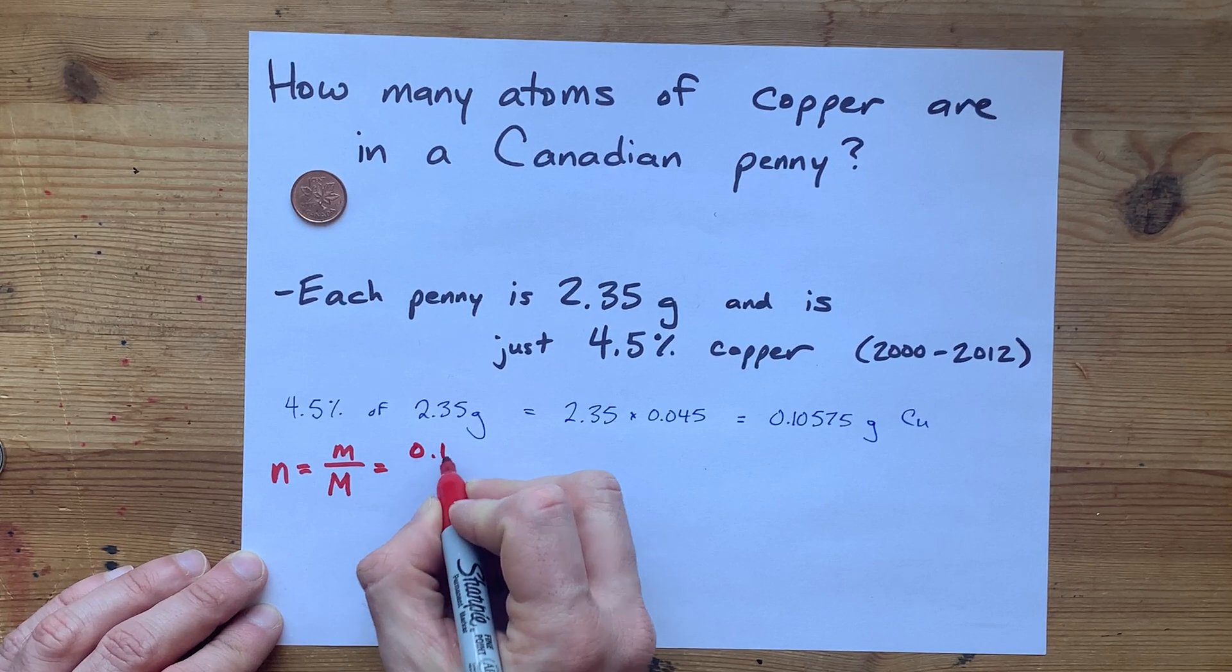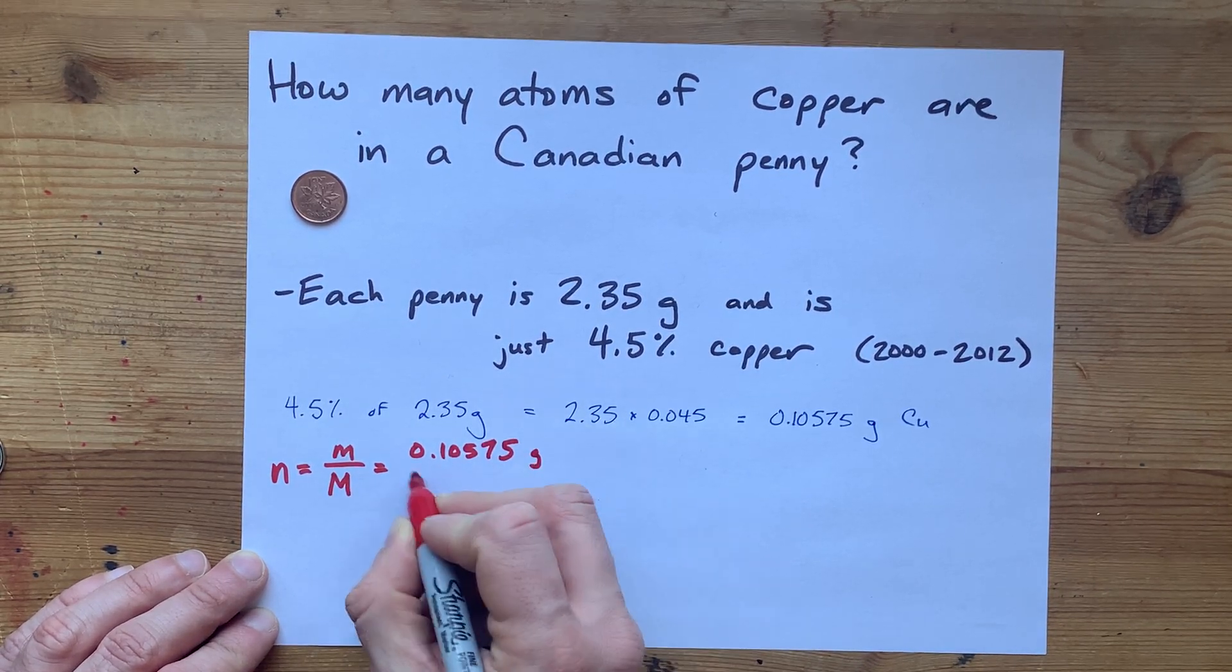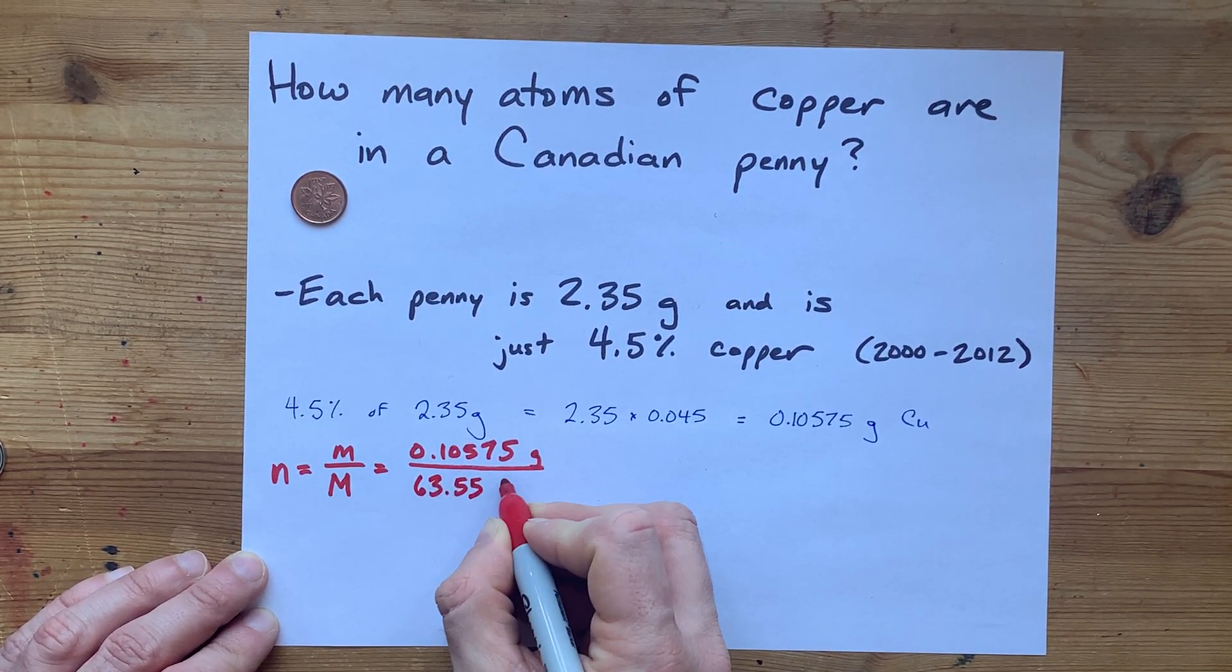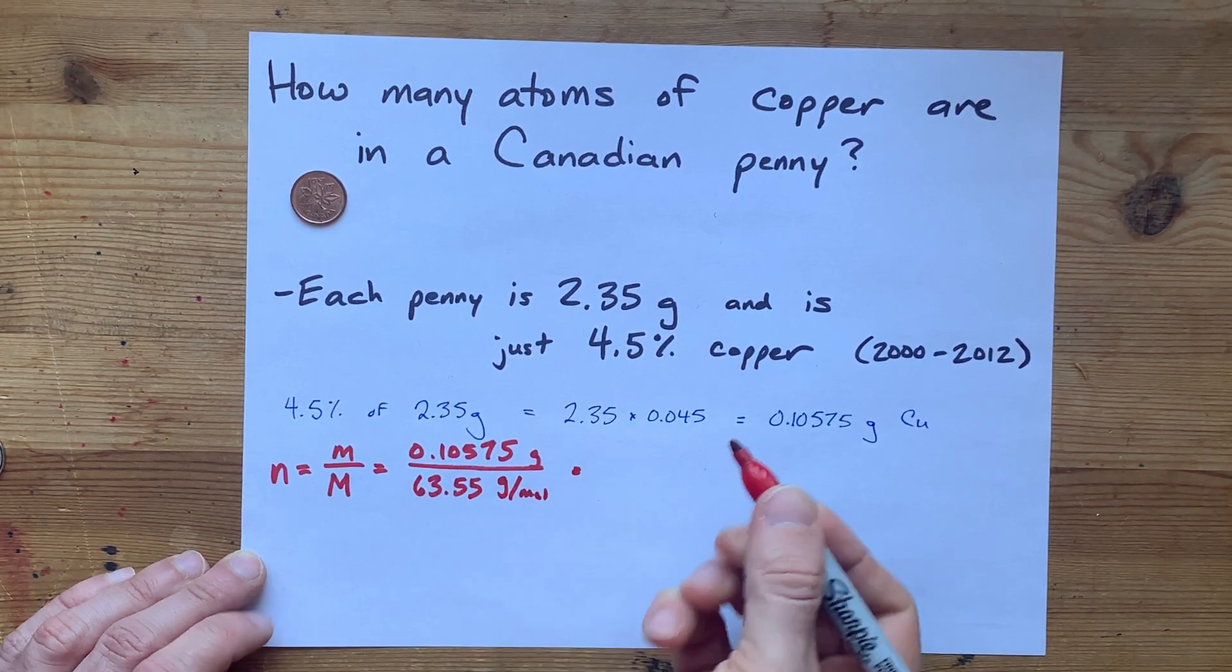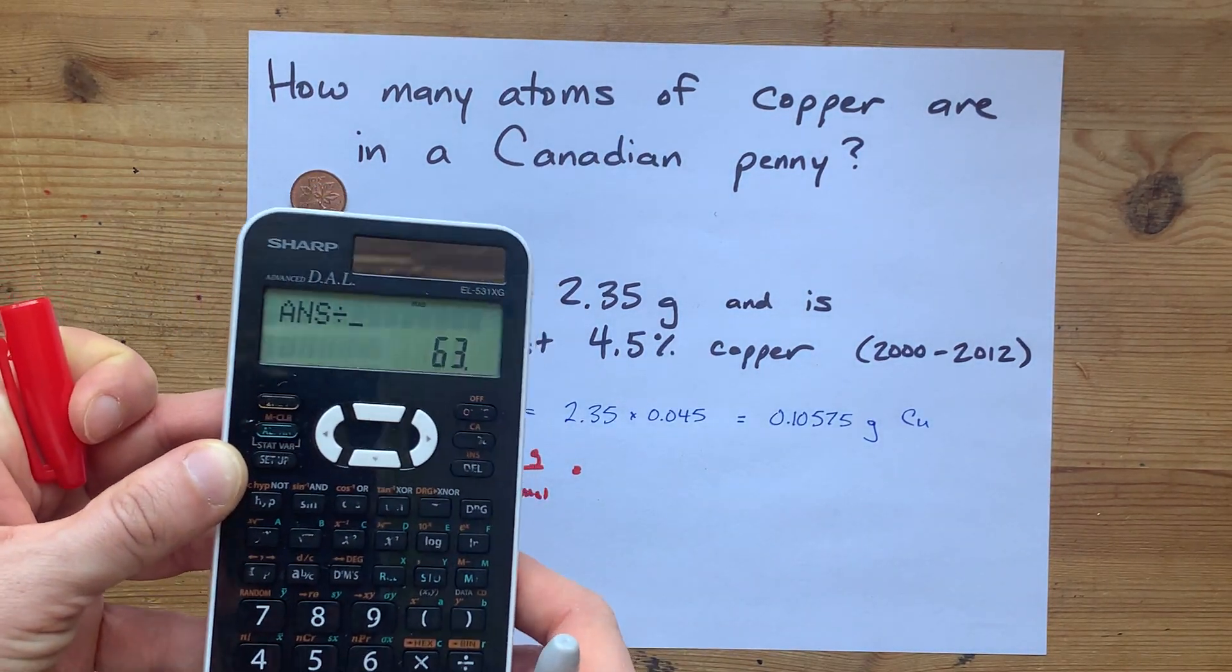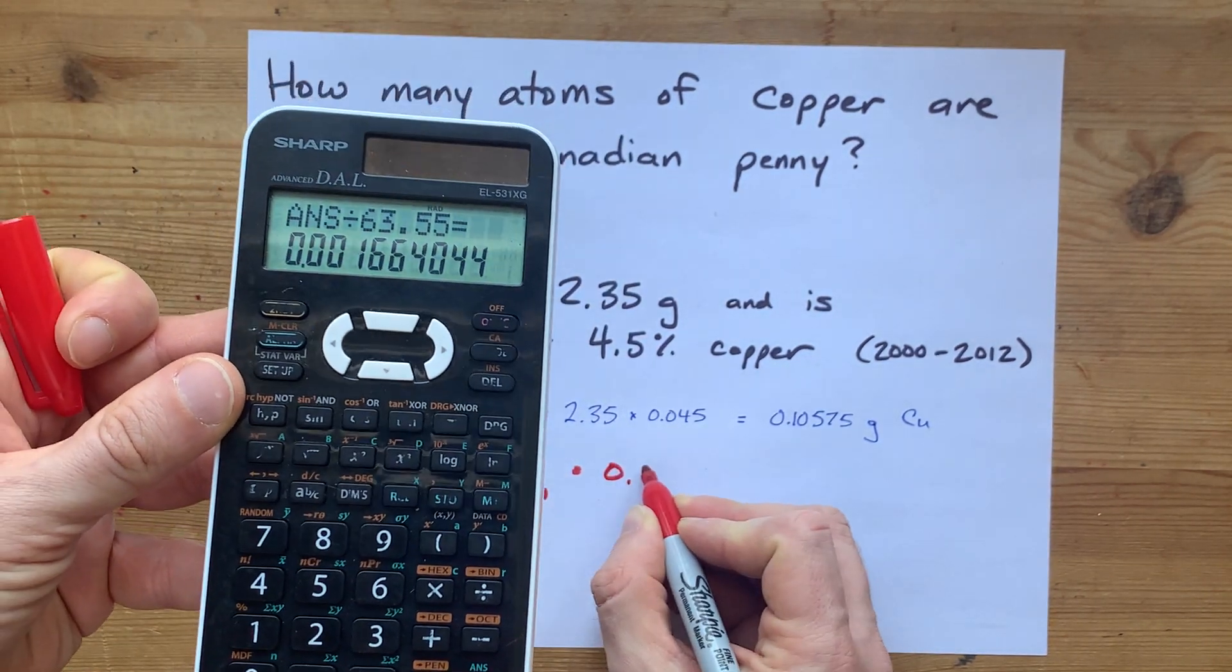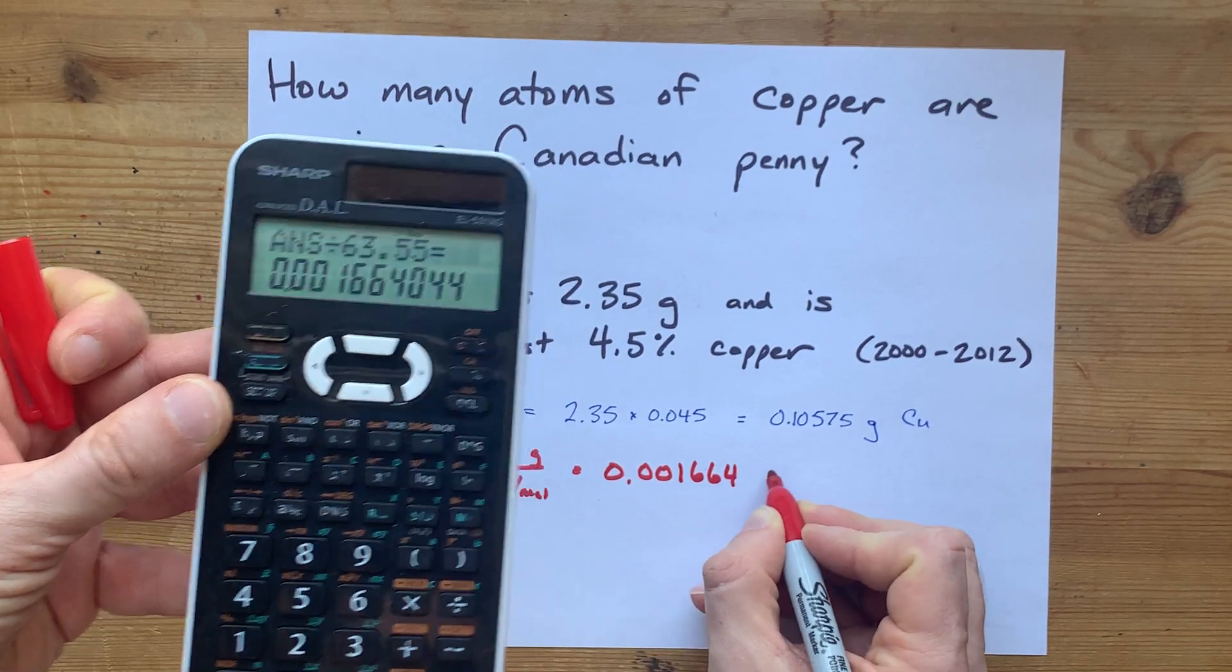The mass that I'm converting is 0.10575 grams, and the molar mass, or atomic mass, of copper is, I believe, 63.55 grams per mole. If I'm wrong about that, you wouldn't be watching this video. 63.55 is what I'm going to divide my mass by. That gives me a tiny number: 0.001664 moles.